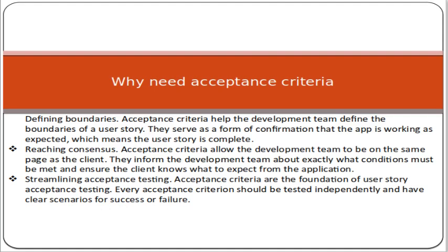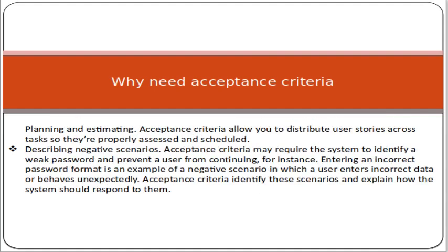These things are very important. Planning and estimation: acceptance criteria allow you to distribute user stories across tasks so they are properly assessed and scheduled. Describing negative scenarios: acceptance criteria may require the system to identify a weak password and prevent a user from continuing. For instance, entering an incorrect password format is an example of a negative scenario in which a user enters incorrect data or behaves unexpectedly. Acceptance criteria identify these scenarios and explain how the system should respond to them.